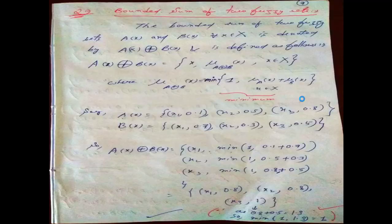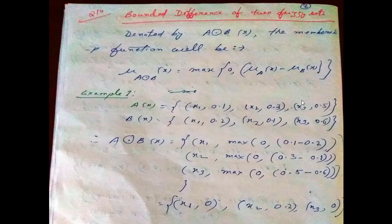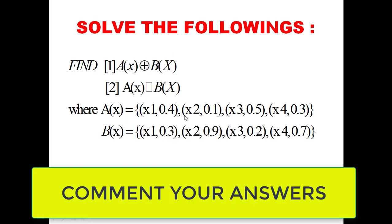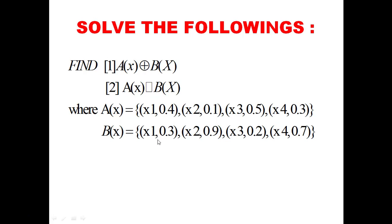I hope bounded sum and bounded difference are clear to you now. Solve this practice problem: A(X) = {X1/0.4, X2/0.1, X3/0.5, X4/0.3} and B(X) = {X1/0.3, X2/0.9, X3/0.2, X4/0.7}. Find the bounded sum and bounded difference between them.